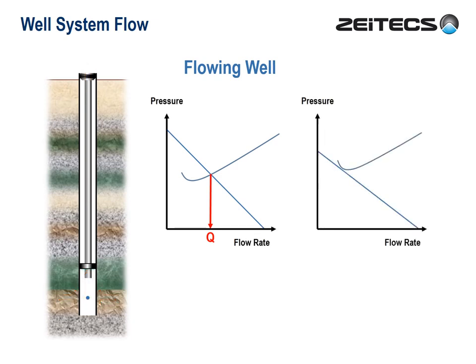Sadly, however, this is not always the case. Sometimes, when we cross-plot, the lines don't cross. And so there's no unique solution and no flow. This is a dead well. And I think you all know where we're going now — this illustrates the fundamental need for artificial lift.